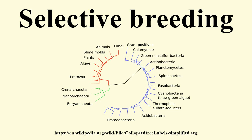Darwin used the term artificial selection twice in the 1859 first edition of his work On the Origin of Species, in Chapter 4, Natural Selection, and in Chapter 6, Difficulties on Theory: 'Slow though the process of selection may be, if feeble man can do much by his powers of artificial selection, I can see no limit to the amount of change, to the beauty and infinite complexity of the co-adaptations between all organic beings, one with another and with their physical conditions of life, which may be affected in a long course of time by nature's power of selection.'